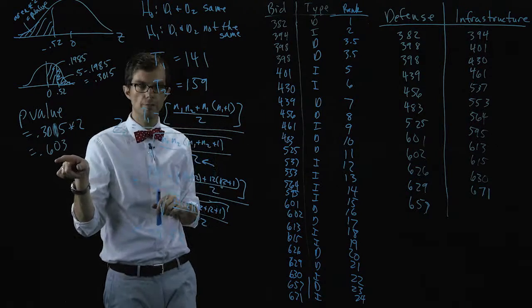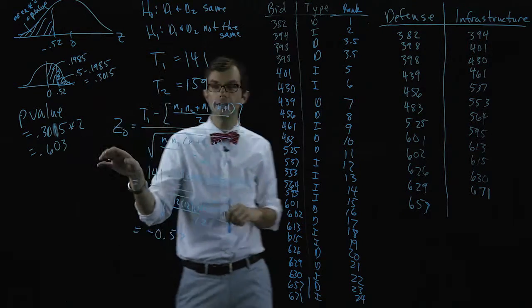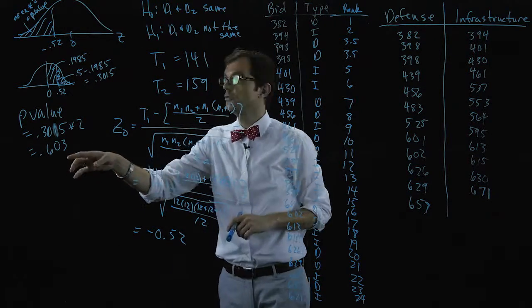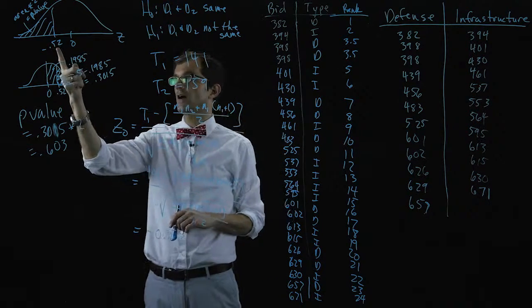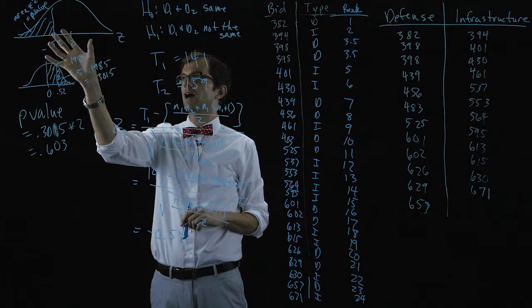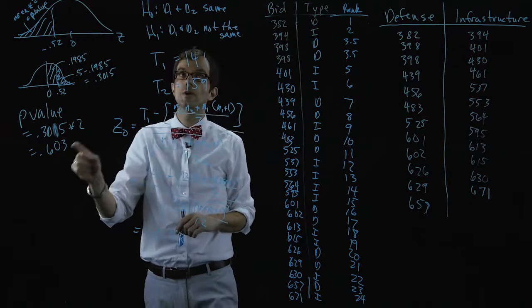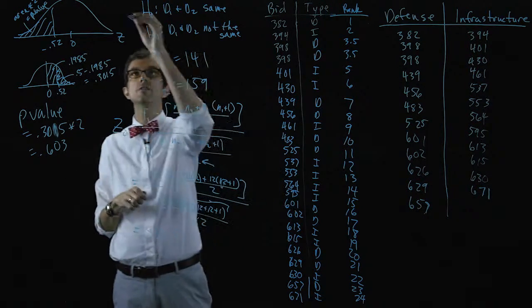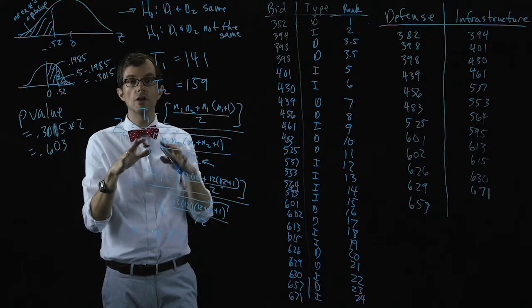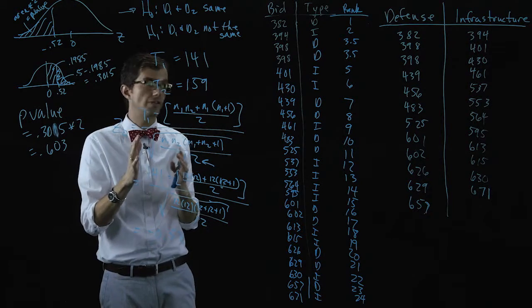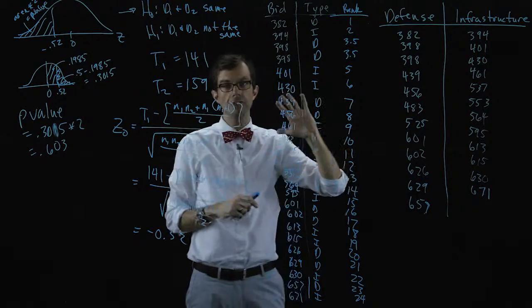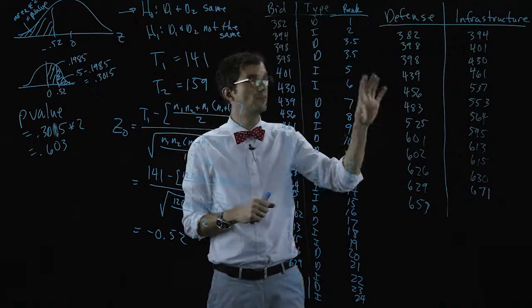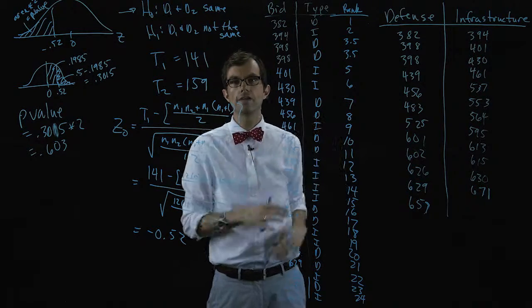P-value, very large number here. Much larger than any alpha you would ever choose. We will not reject the null. This value would definitely lie in the non-rejection region. We're not going to reject the null hypothesis and we're going to conclude that these two distributions have roughly the same central tendency. That is, the bids for defense and infrastructure projects are roughly the same. Our bids for one are no different than the other.